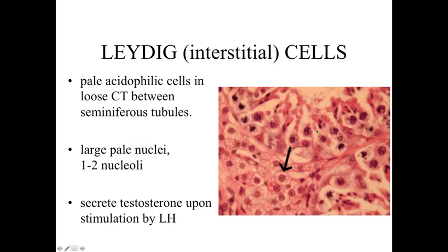Outside of the seminiferous tubules, in between the seminiferous tubules in the loose connective tissue, are going to be these large, pale, slightly eosinophilic cells — these are the Leydig cells. They're a relatively large cell with pale nuclei, maybe one or two nuclei present. It's these cells that respond to luteinizing hormone and secrete testosterone. Testosterone is important because it stimulates and maintains the activity of the cells within the seminiferous tubules, as well as all of the other duct cells within the male reproductive tract, and also has an androgenizing effect on the body. It's an anabolic steroid with a lot of effects. Without testosterone, you're not going to have a functioning male reproductive tract.